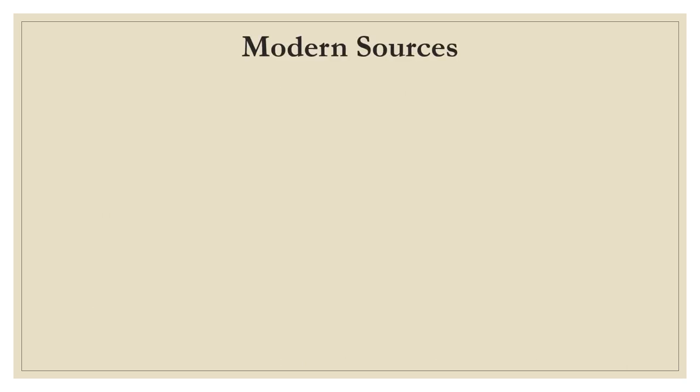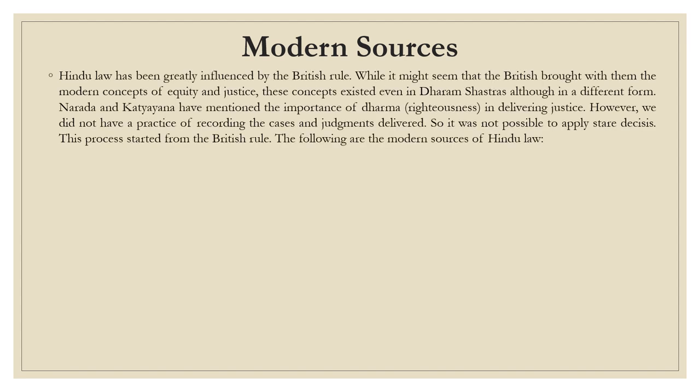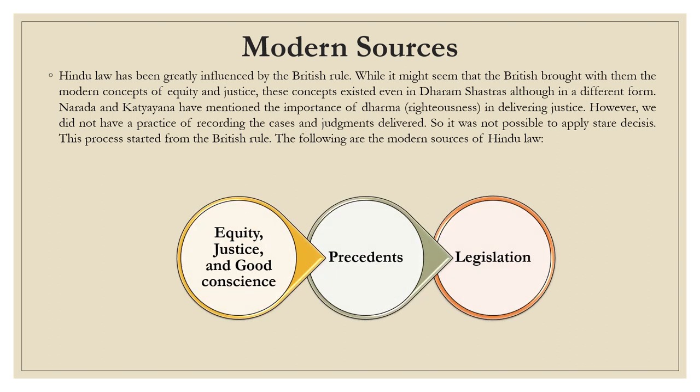Next is modern sources of Hindu law. Hindu law has been greatly influenced by the British rule. While it might seem that the British brought with them the modern concept of equity and justice, these concepts exist even in Dharmashastra, although in a different form. Narad and Katyayan have mentioned the importance of dharm in delivering justice. However, there was no practice of recording cases and judgments delivered, so it was not possible to apply stare decisis. This process was started from the British rule. The modern sources of Hindu law are: equity, justice and good conscience; precedent; and legislation.